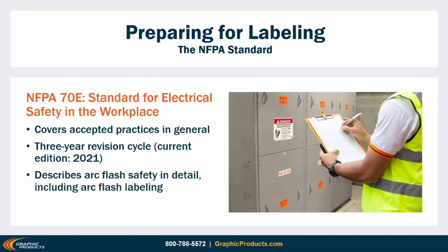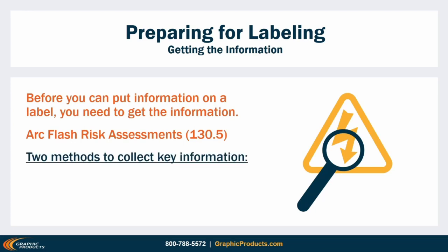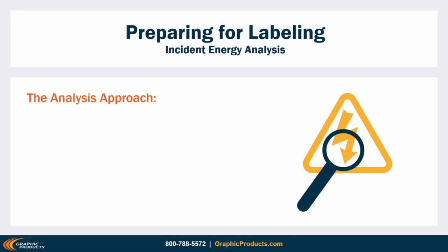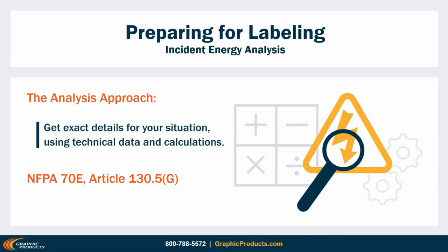NFPA 70E dedicates a lot of its content to arc flash safety. It requires arc flash labels to include certain specific details that will inform safe choices when workers need to interact with the equipment. But before you can put detailed information on a label, you need to get that information from somewhere. Collecting that information is part of an arc flash risk assessment described in Article 130.5. Within that process, there's an important section for identifying what PPE is really needed, offering two different methods: analysis and categories.